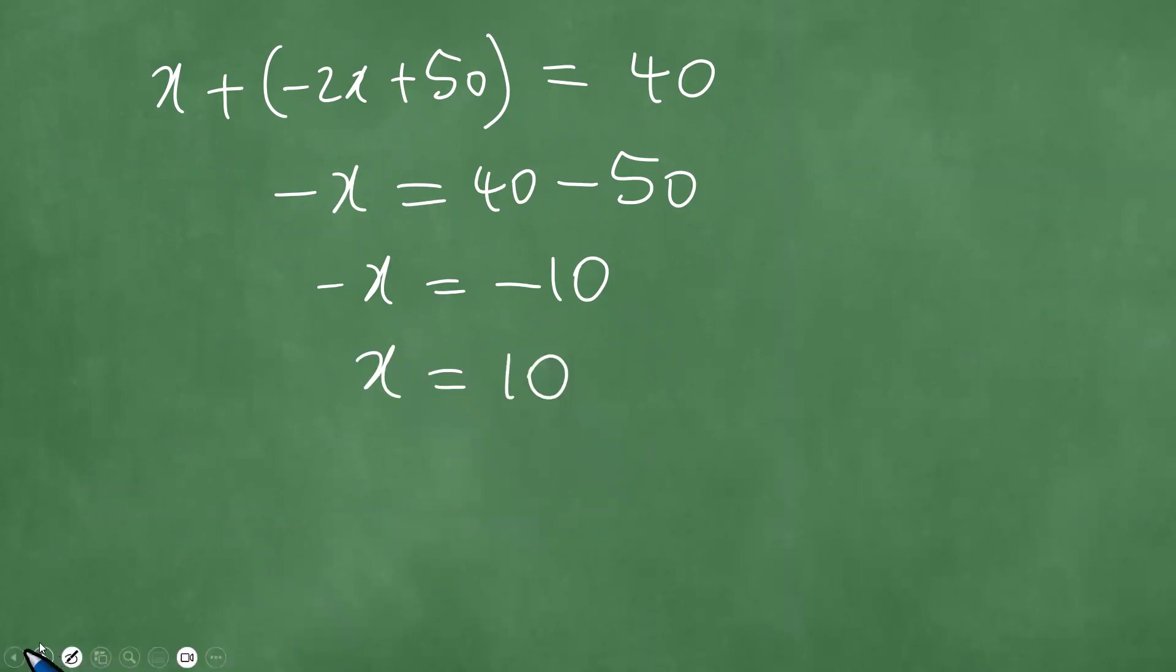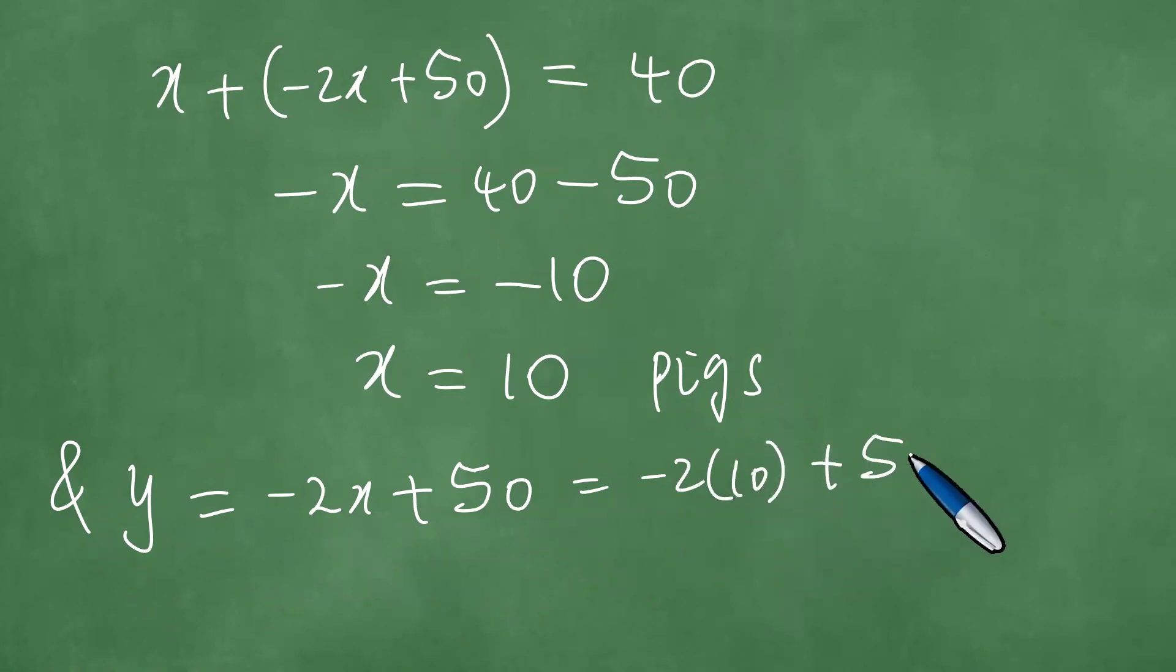We know that X is the number of pigs. So in other words, it means that we have the exact total number of 10 pigs. And Y is minus 2X plus 50 here, which is minus 2 times 10 plus 50. And this is minus 20 plus 50, which is 30.